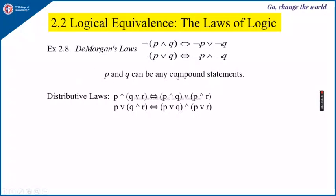Negation of (P AND Q) is equivalent to NOT P OR NOT Q. And the other De Morgan's law: negation of (P OR Q) is equivalent to NOT P AND NOT Q, where the OR is replaced by AND. Here P and Q can be simple or compound statements. This is De Morgan's law. Next is the distributive law: P AND (Q OR R) is equivalent to (P AND Q) OR (P AND R) — this is the distributive law of AND over OR. The second distributive law is P OR (Q AND R) is equivalent to (P OR Q) AND (P OR R) — distributive law of OR over AND.